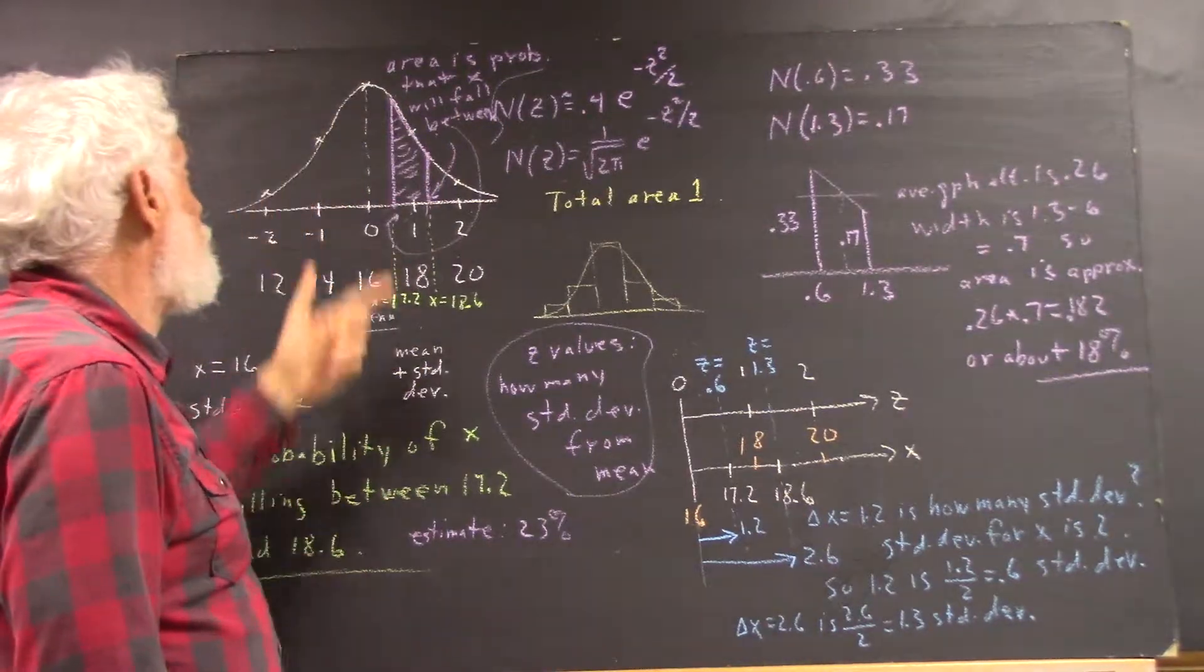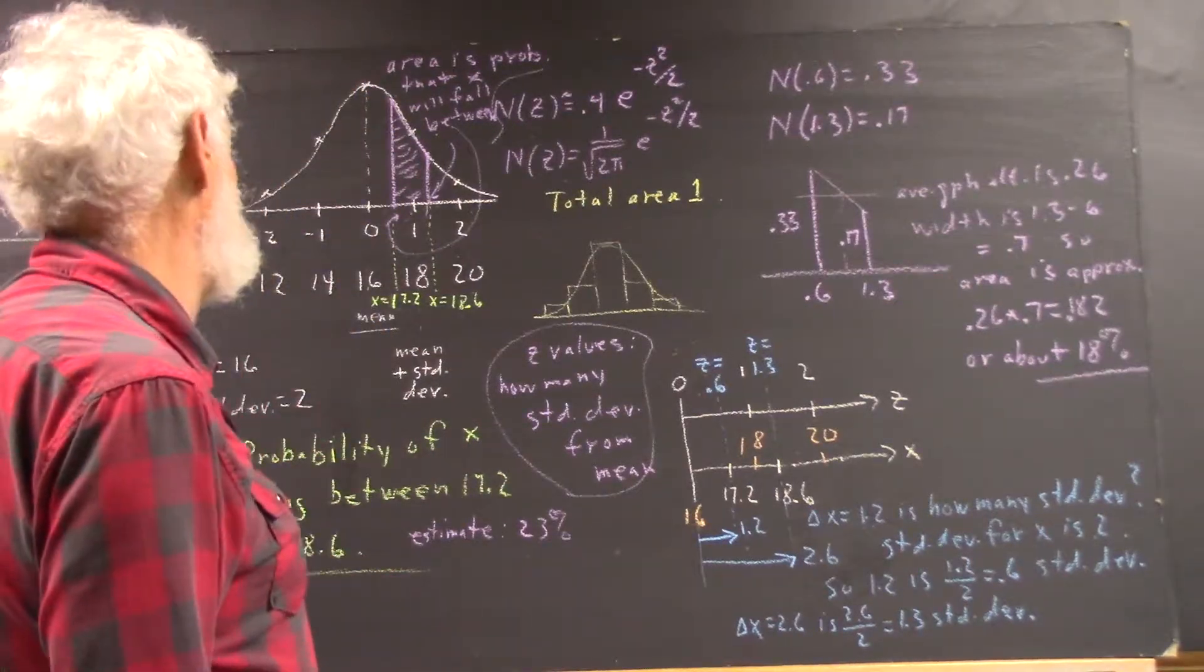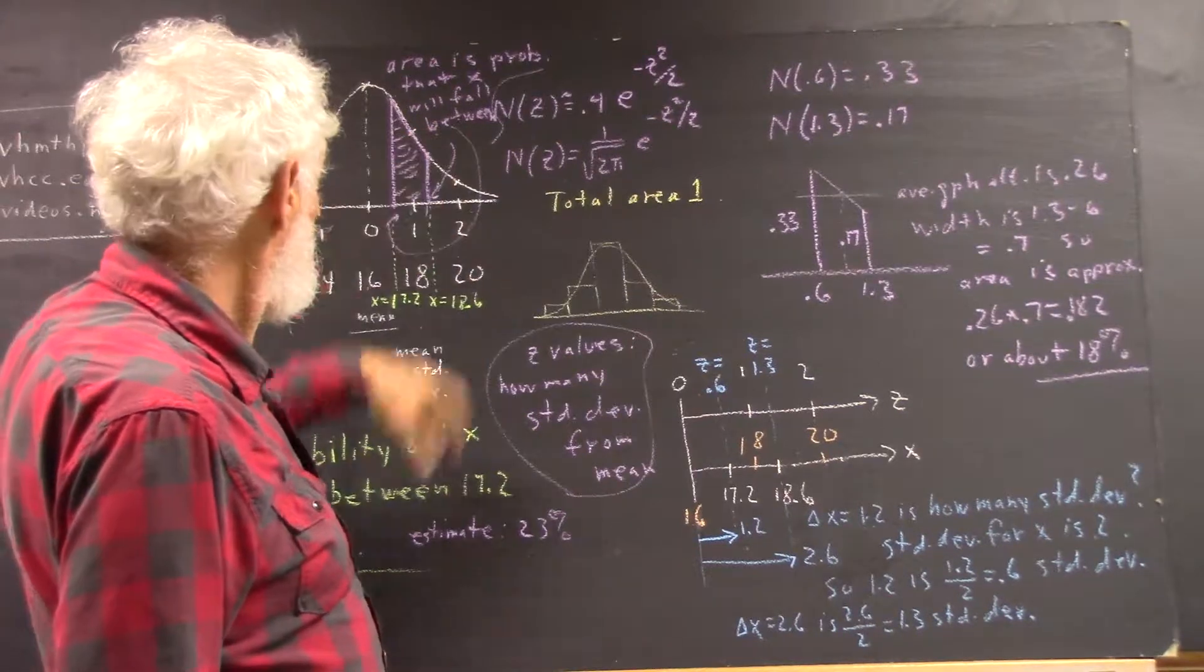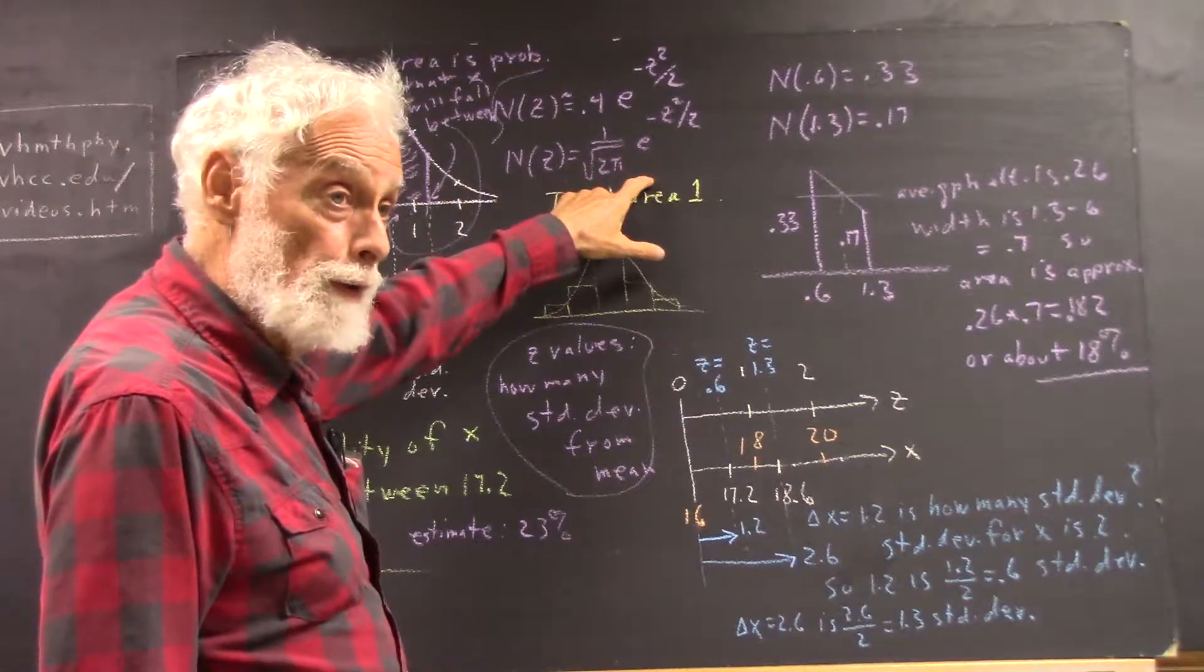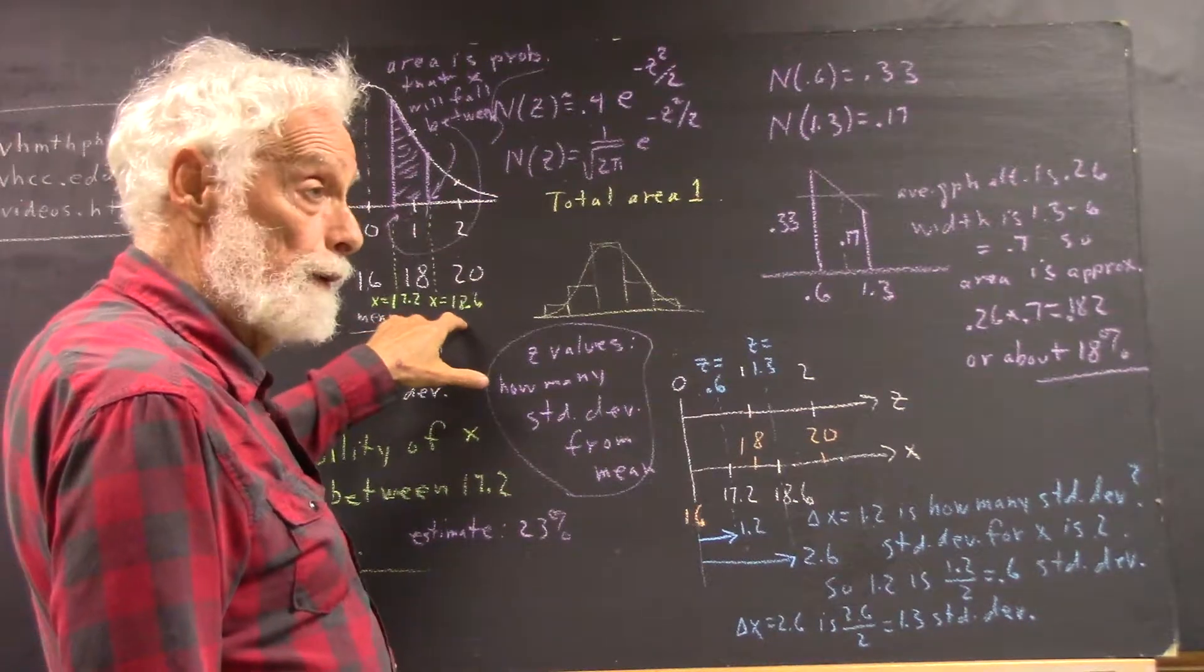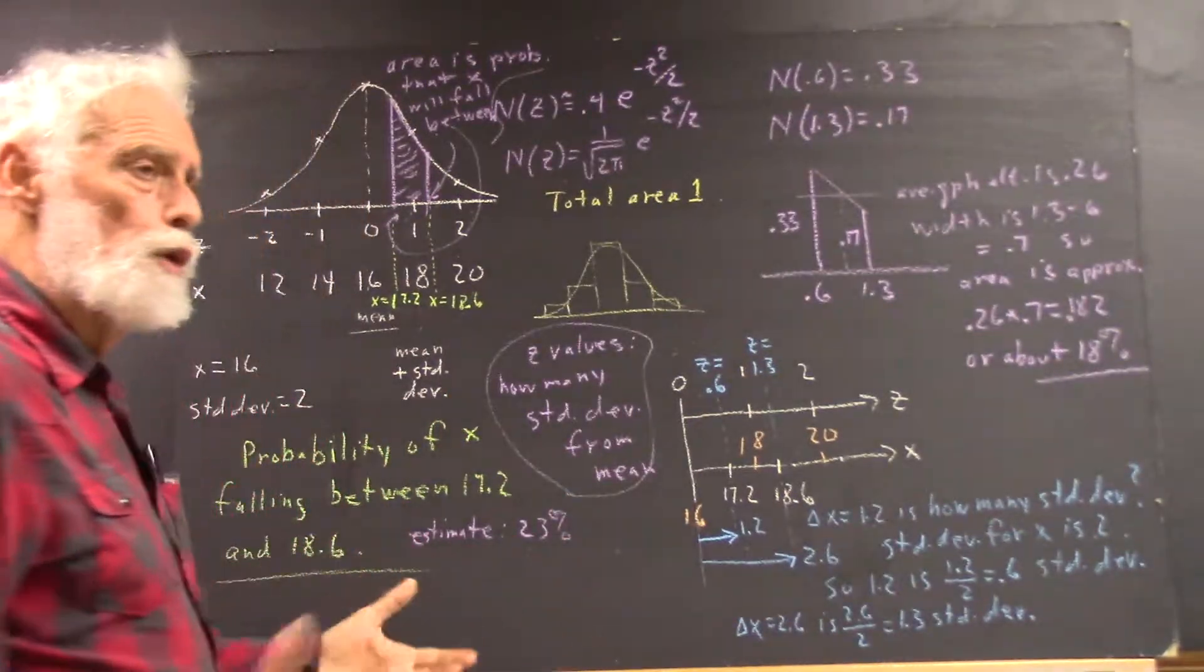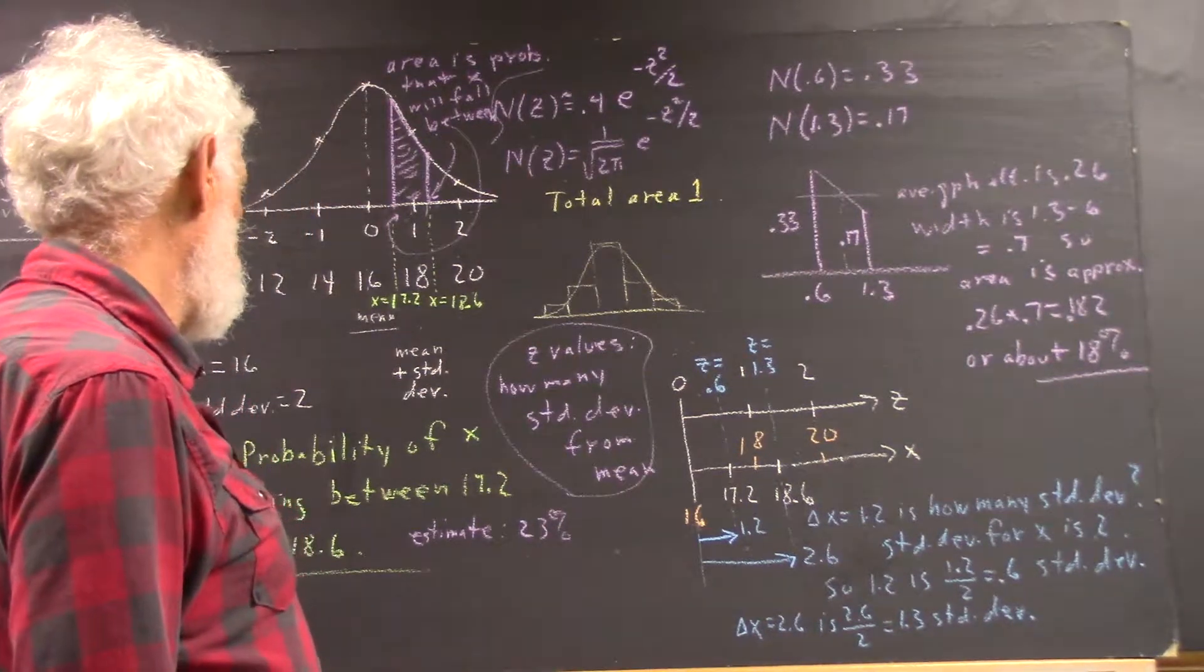Now, to calculate that area, or to estimate it using, let's say, a trapezoidal approximation, you would need to know what this distance is and what this distance is. In order to get this distance and this distance, you've got to know what z to put into the function, and you don't know z. What you know is the x value, so you've got to have a way of translating from x values to z values. Now there's a fairly simple formula for that, but the formula doesn't contain any insight. So we're trying to do everything we can here by insight.